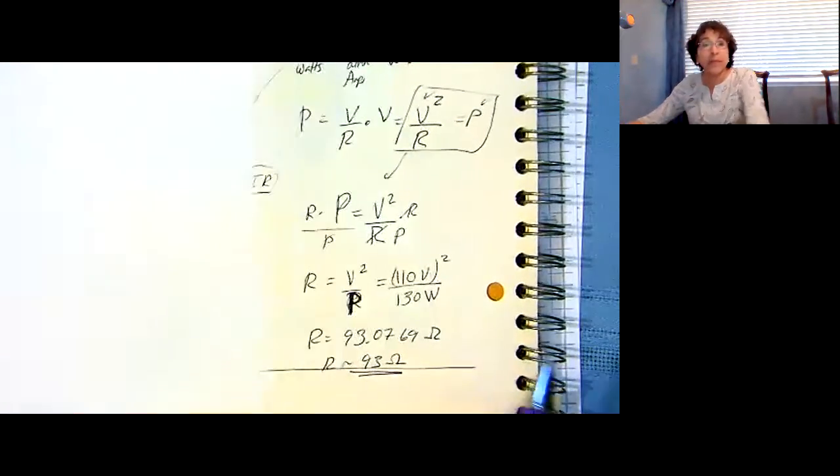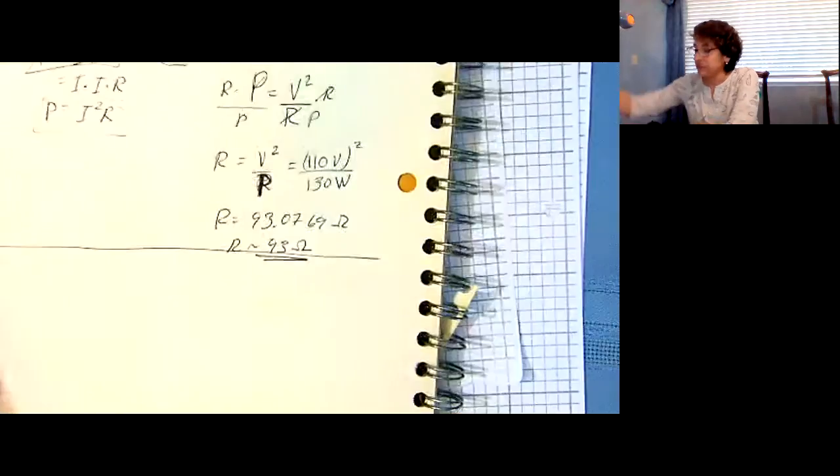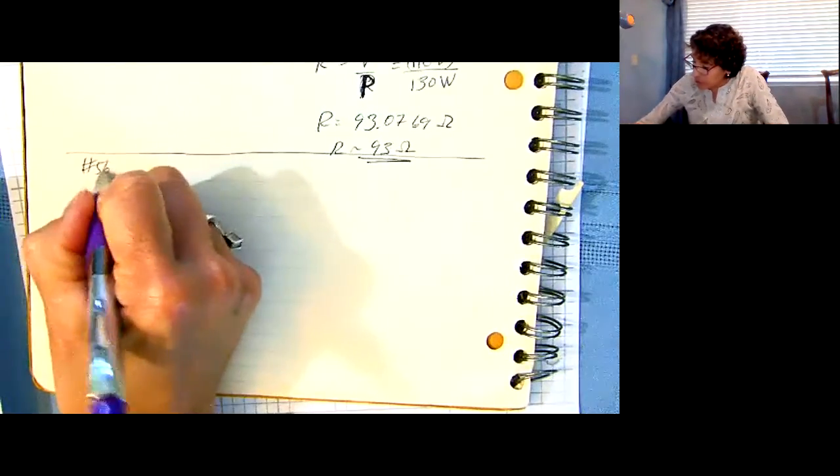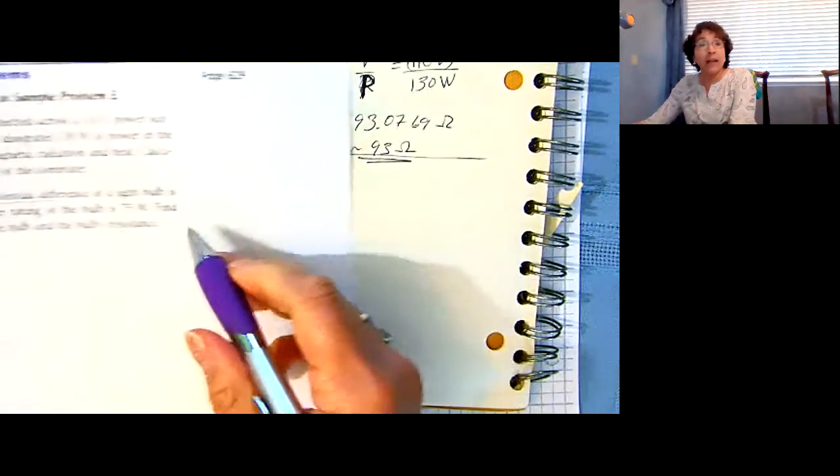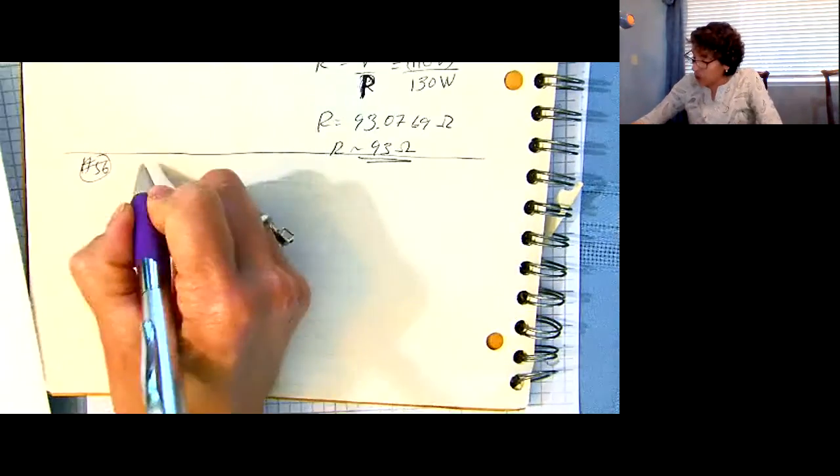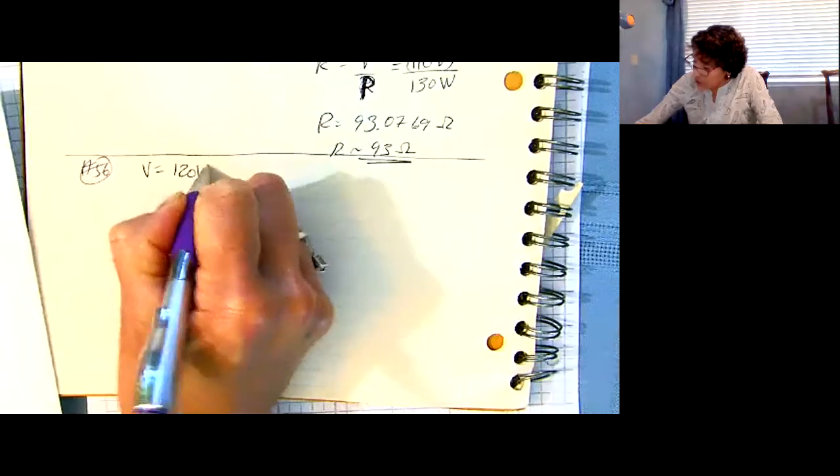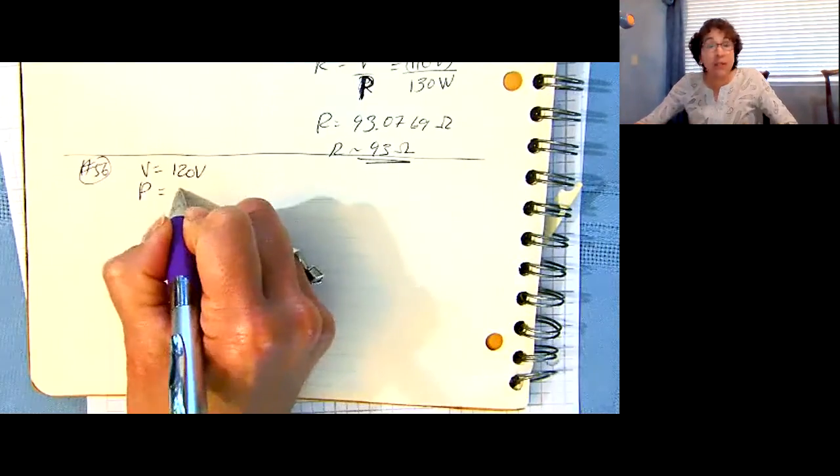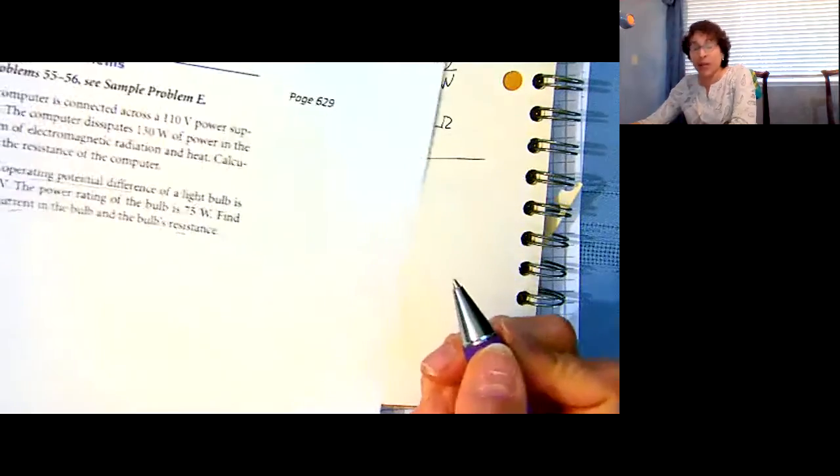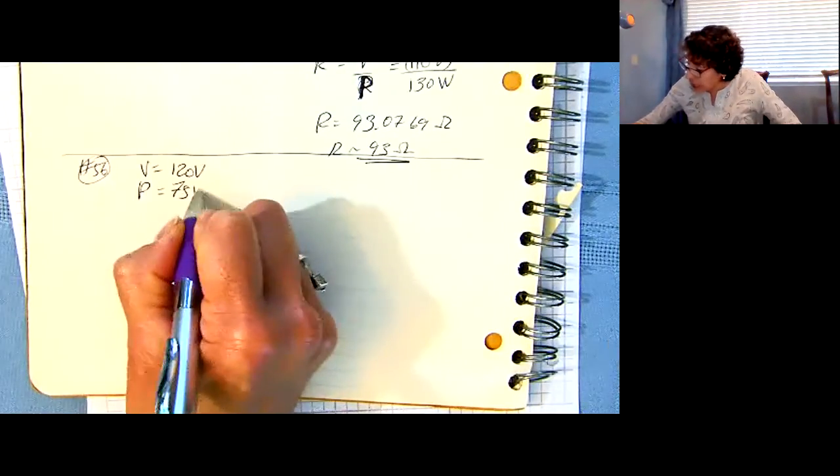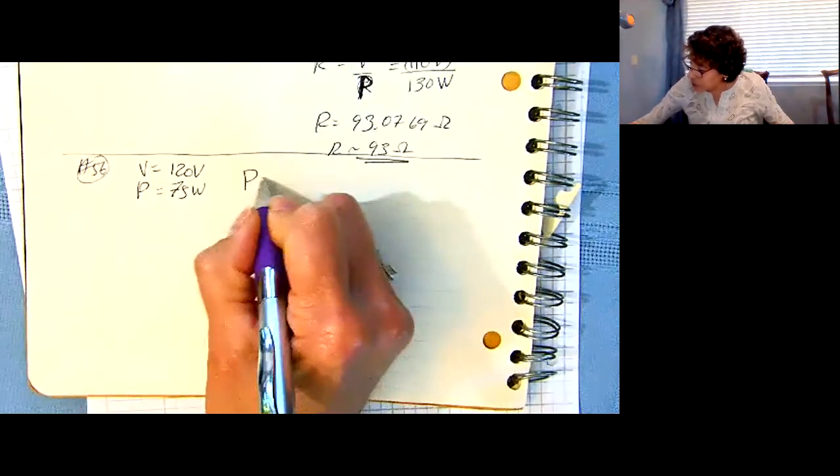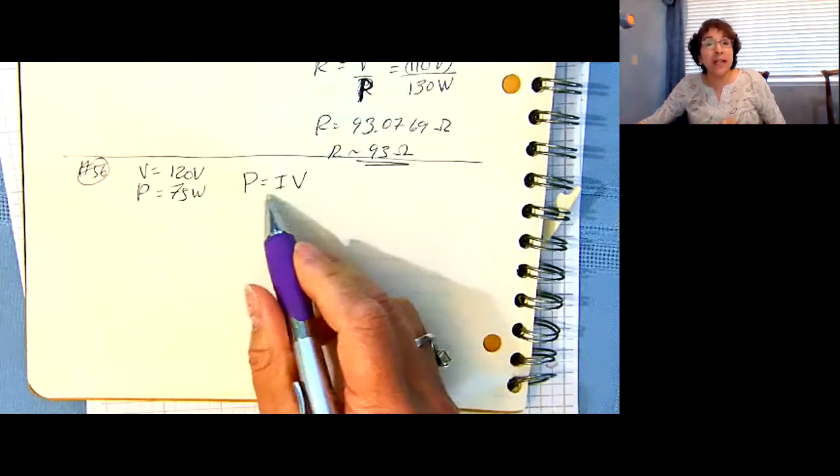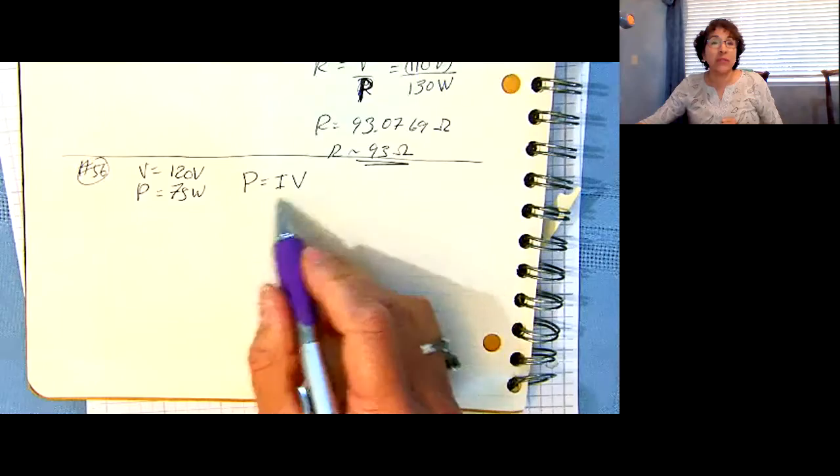Now they want to know the current and the resistance. Number 56. They tell us that the voltage is 120 volts, and they tell us that the power is 75 watts. So the first thing I think of is P equals IV. I know that one.